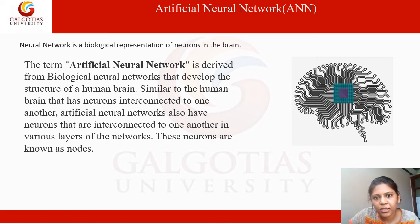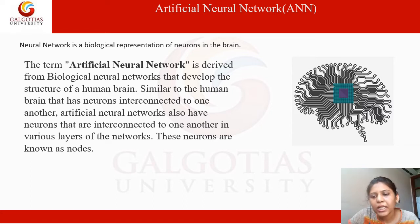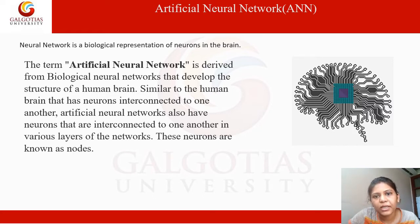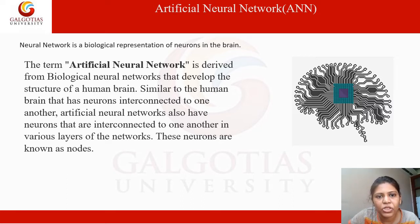There are three terms in artificial neural network. First, what is artificial? Artificial is a thing that is made by humans which is not present naturally — so it is called artificial. Now the second term is neural network. What is neural network? Neural network is a biological representation of neurons in the brain.